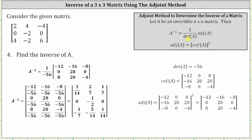The determinant of A is negative 56, giving us one divided by negative 56 times the adjoint of A, which is the transpose of the cofactor matrix. Performing the scalar multiplication and simplifying the fractions, the first row of A inverse is 3/14, 2/7, and 1/7. The second row is 0, negative 1/2, 0. And the third row is negative 1/7, negative 5/14, and 1/14. I hope you found this helpful.